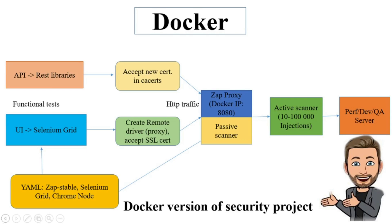After that, ZAP works the same way. Java API needs to accept the ZAP certificate using Java JRE library cacerts. Selenium doesn't need to accept any certificate in Docker. HTTP traffic runs via the Docker ZAP port, ZAP intercepts it and starts attacking.